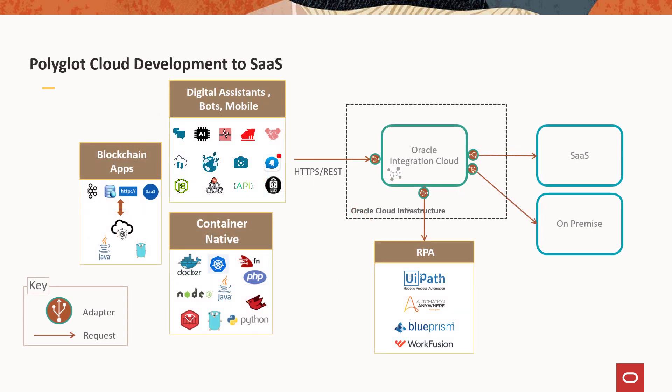Within the Oracle ecosystem, there are a large number of other services running in OCI that we can take advantage of from within Oracle Integration Cloud. In the REST adapter, we support standard OCI signatures alongside AWS signatures, so we can take advantage of all OCI native applications including blockchain, Oracle Digital Assistance, as well as calling out into container-native applications.